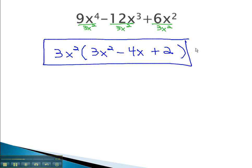We have now factored this expression to 3x squared times 3x squared minus 4x plus 2.